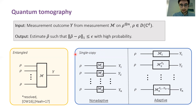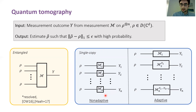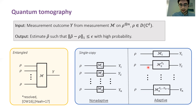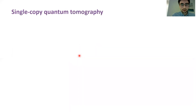Within single copy strategies, you can make a further distinction between non-adaptive and adaptive strategies. In the non-adaptive case, the measurements you're performing have to be chosen ahead of time. Whereas in the adaptive case, you're allowed to choose your measurement based on the previous outcomes that were obtained. This is the kind of quantum tomography that we're going to be interested in.